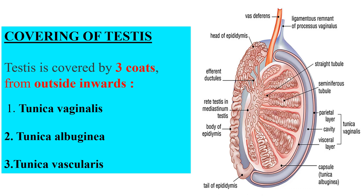The testis is covered by three coats from outside inward: tunica vaginalis, tunica albuginea, and tunica vascularis. Tunica vaginalis is the outermost covering — the lower persistent portion of processus vaginalis, covering the whole testis except the posterior border, as parietal and visceral layers. Tunica albuginea is a dense white fibrous coat whose posterior border thickens to form the mediastinum testis, with numerous septa extending from it. Tunica vascularis is the innermost vascular coat — a network of capillaries supported by delicate connective tissue. A thin fluid layer separates the two sections and reduces friction between the testis and scrotum.